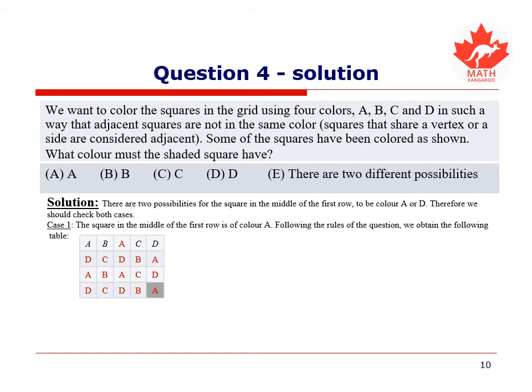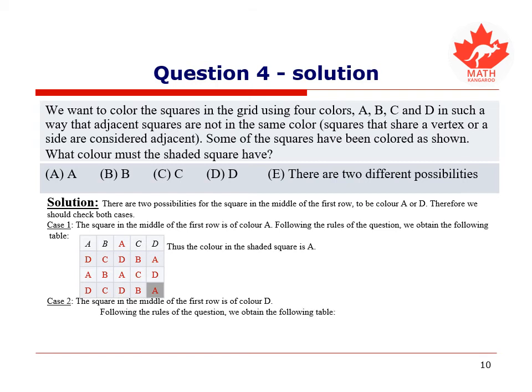Hence, as we can see from the table here, the only possibility for the color of the shaded square, in this case, is A. Now we check for case 2, where the square in the middle of the first row is color D. Then, following the exact same rules, the colors in the rest of the square are as follows.